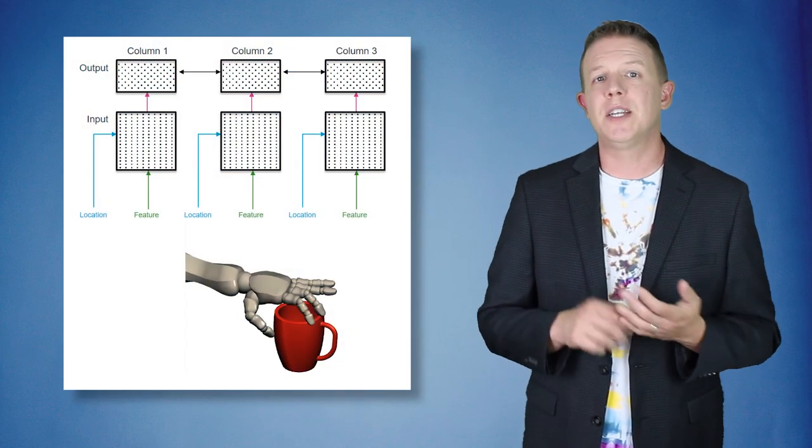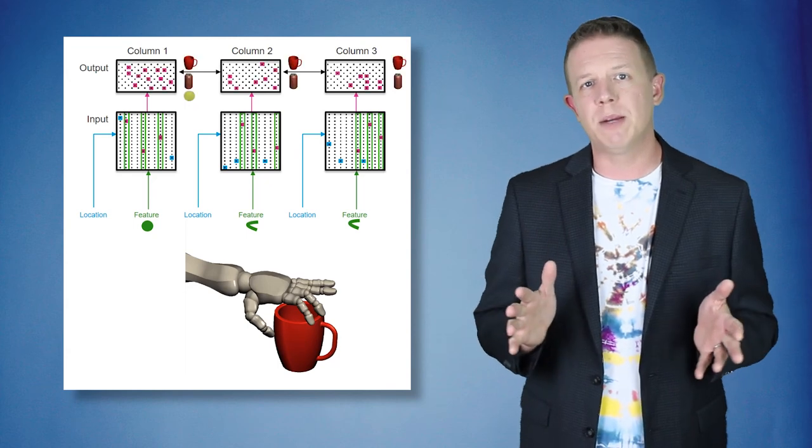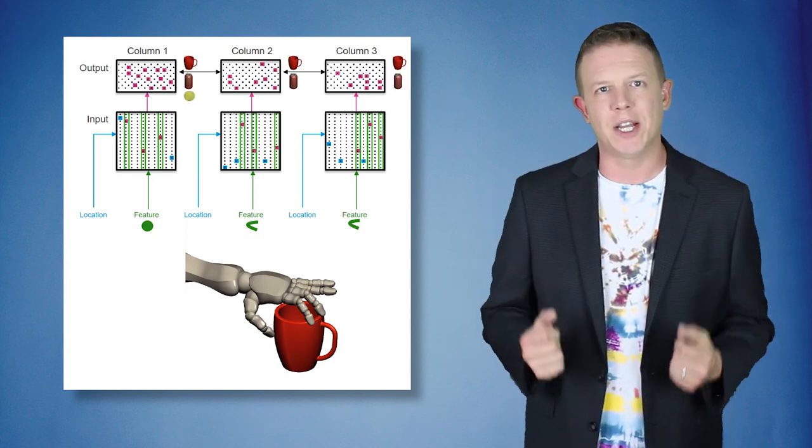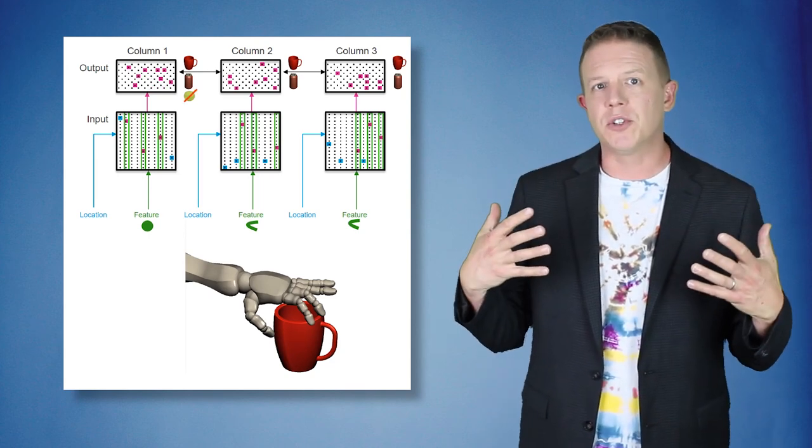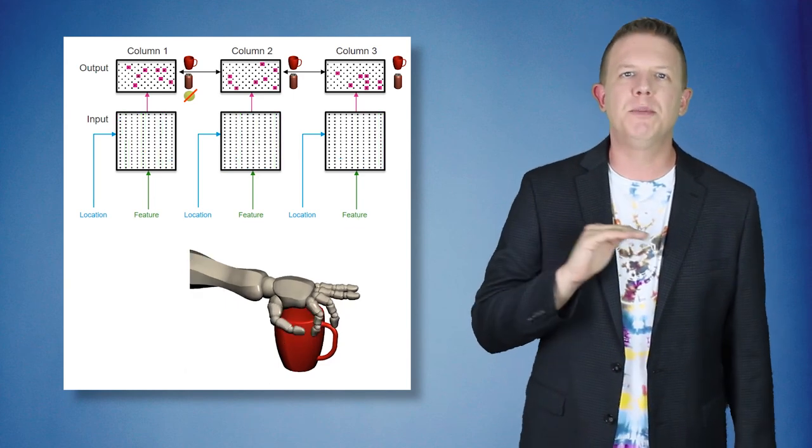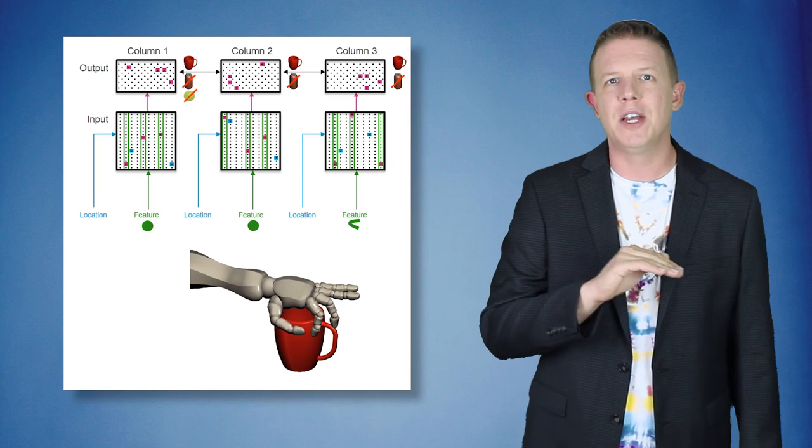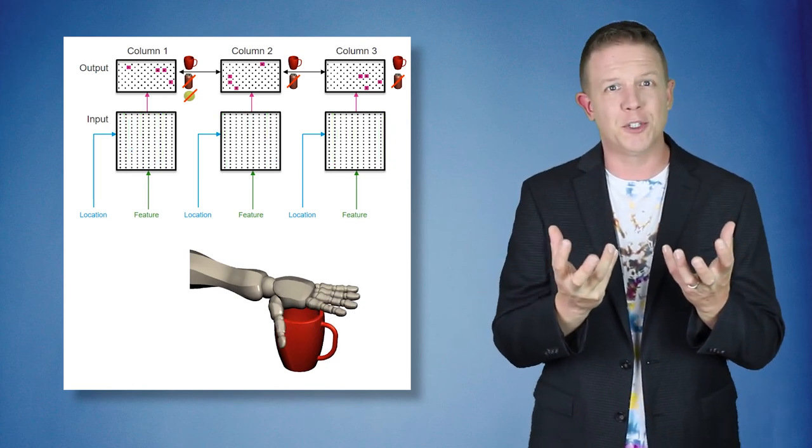This brings our discussion about HTM sequence memory to a close. However, there's a lot more to HTM than just sequence memory. HTM sensory motor theory uses essentially the same learning algorithms I've gone over in HTM school so far to do 3D object recognition. In the next few episodes, I'll be talking about bigger structures like cortical columns, multiple layers of cortex, and how interactions between cortical columns and layers allow your brain to do sensory motor integration to recognize objects in 3D space based upon motor commands and sensory input.